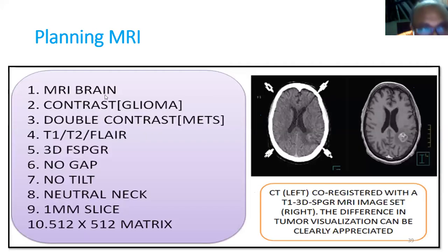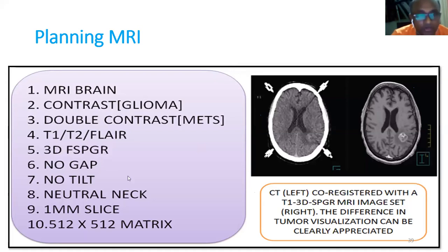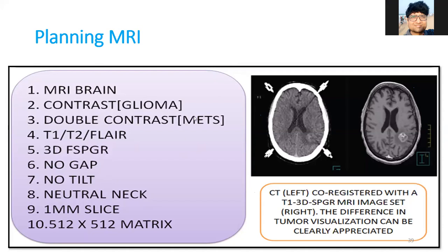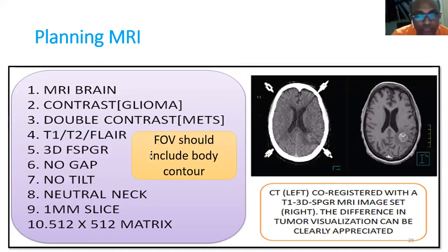When asking for a planning MRI for stereotaxy, you should request: MRI brain with contrast, double contrast if there are metastases, T1, T2, FLAIR sequences, 3D FSPGR sequence, no gap, no tilt, neutral neck position, 1 mm slice thickness, 512x512 matrix. You must write FOV should include the whole body contour. If you do not specify, the radiologist may not provide it, making CT-MR fusion difficult.